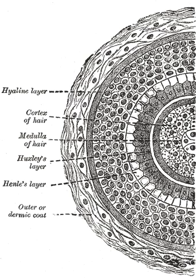Displacement and vibration of hair shafts are detected by hair follicle nerve receptors and nerve receptors within the skin. Hairs can sense movements of air as well as touch by physical objects, and they provide sensory awareness of the presence of ectoparasites. Some hairs, such as eyelashes, are especially sensitive to the presence of potentially harmful matter.